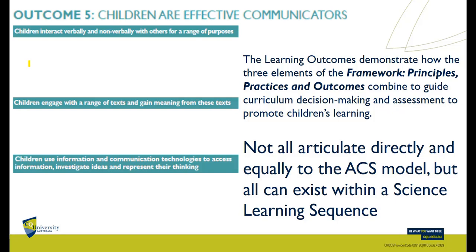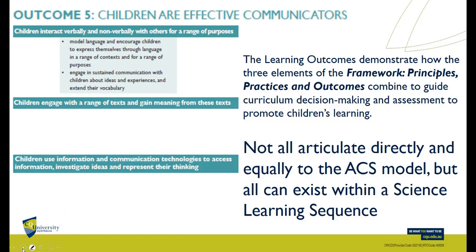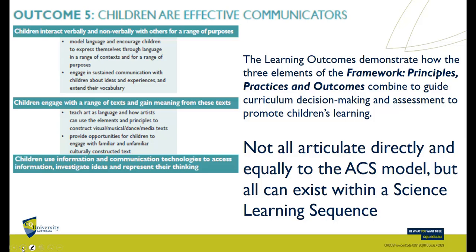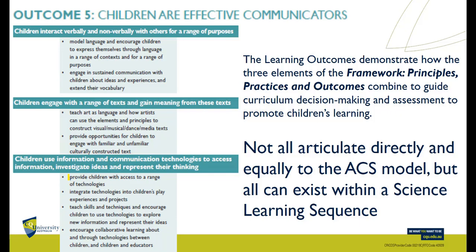Outcome five: children are effective communicators. Here we can see a lot of the science literacy skills — interacting verbally and non-verbally with others for a range of purposes, modelling language in context, and sustained communication about scientific ideas. These are all outcomes you can attach to your pedagogies in Part A of your assignment. Children engage with a range of texts — art, model making, 3D modelling, simulations — and children use information and communication technologies, which is where the digital card comes in.